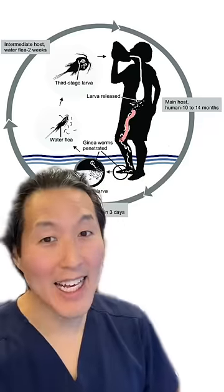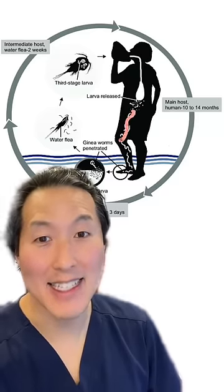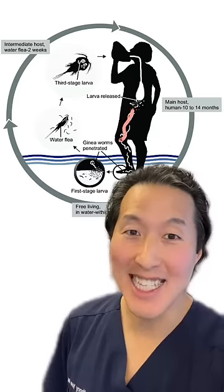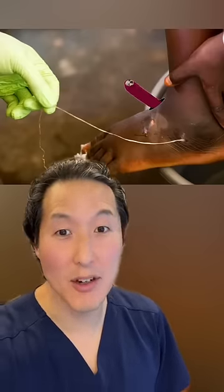They break through and exit through your GI tract, then mate inside your abdominal cavity. The female likely murders the male and slithers down into your leg. It can grow up to three feet long and then erupts through the surface of your skin.